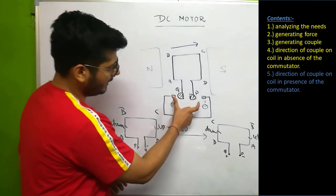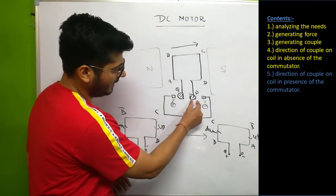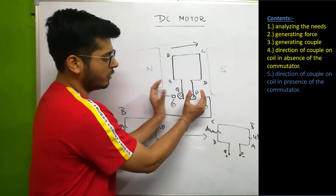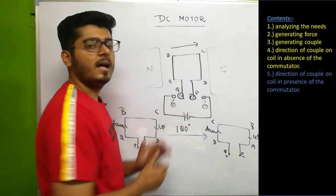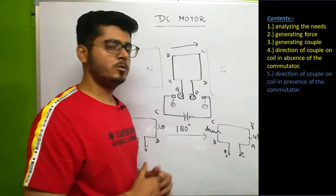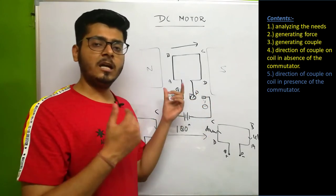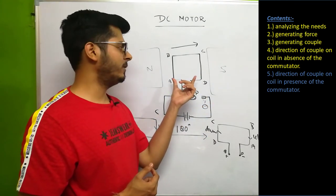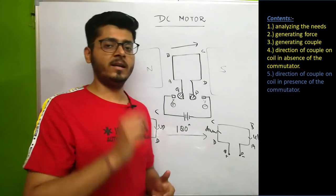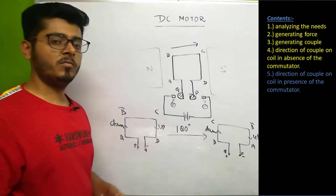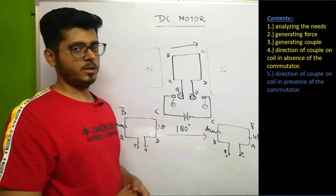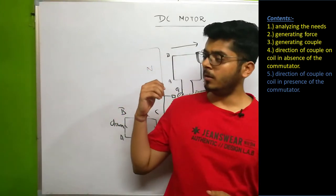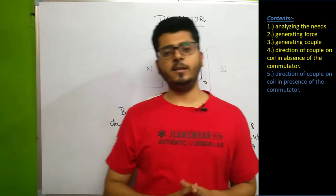This particular arrangement of the split ring and the brush is called a commutator. The commutator helps us maintain the direction of couple acting on a coil in one direction by maintaining the direction of current in one direction. That is how the commutator works.